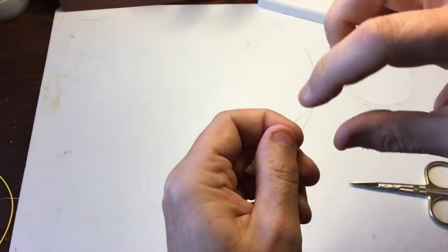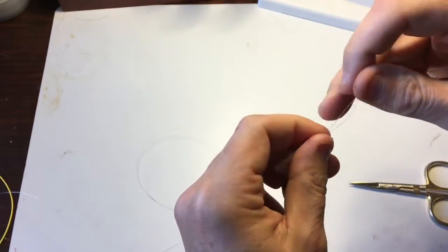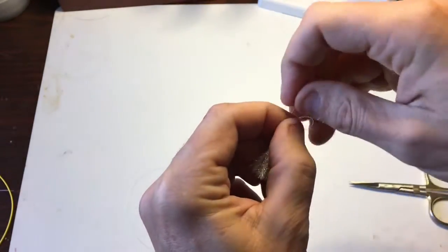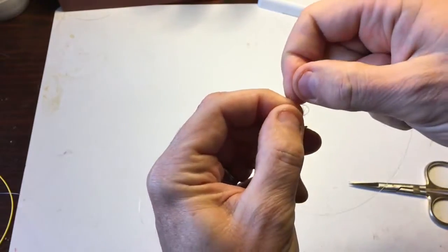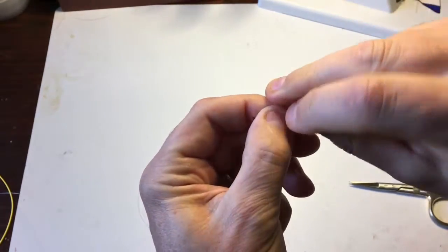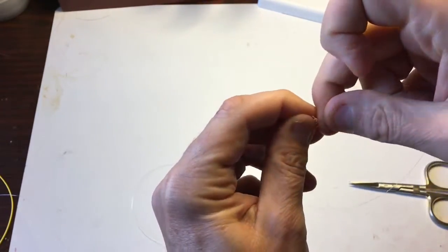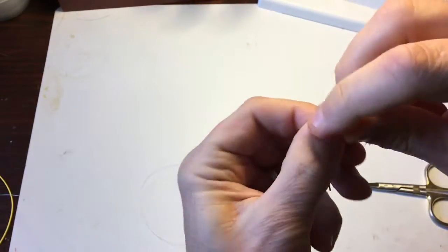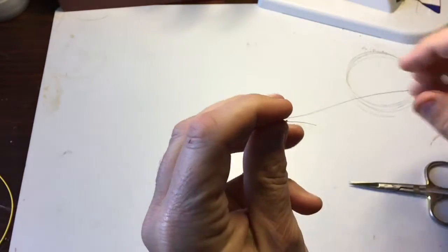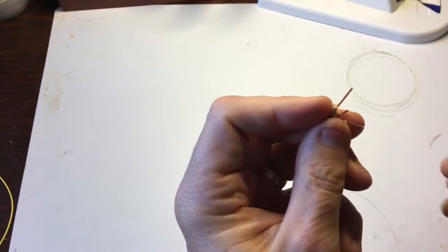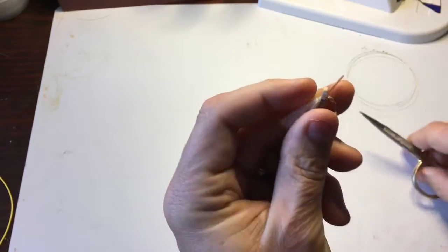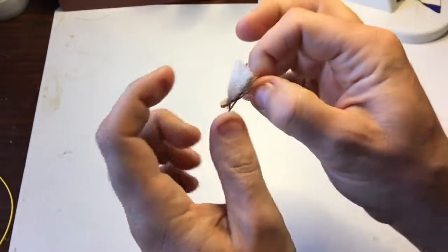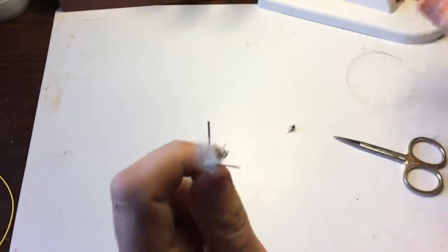I use a dunking loop or a uni knot to attach that first fly. All I'll do is go through a couple times here. A little tight. Make sure you trim the tag end. I trim them pretty close on my dry dropper rig so it doesn't catch any reflection in the water. So that's our first fly.